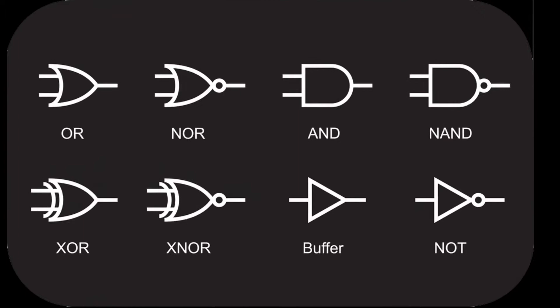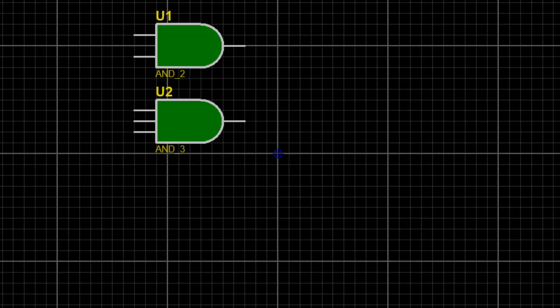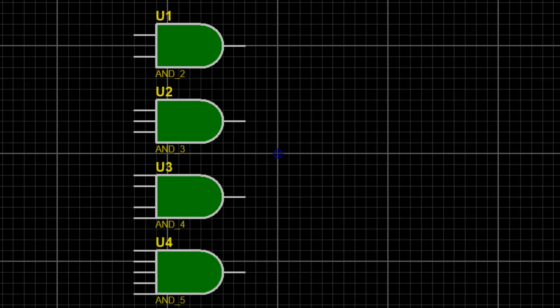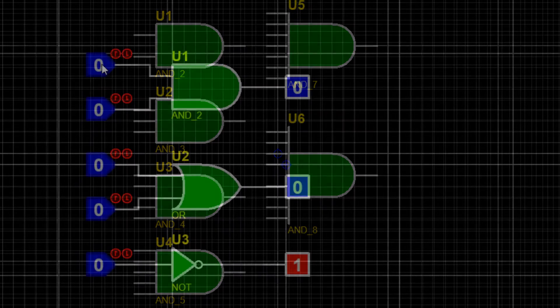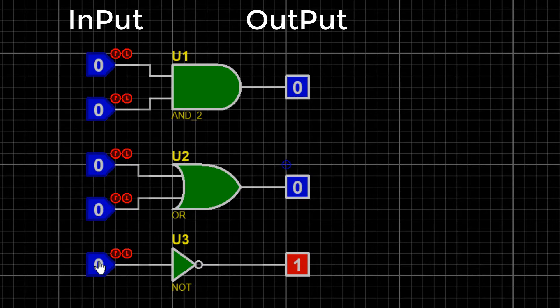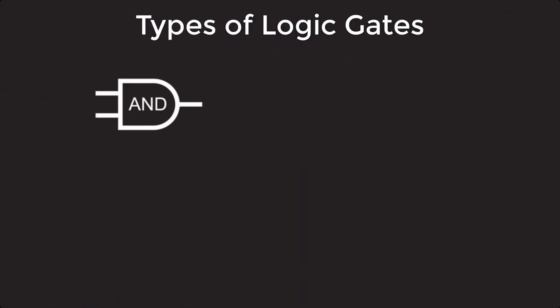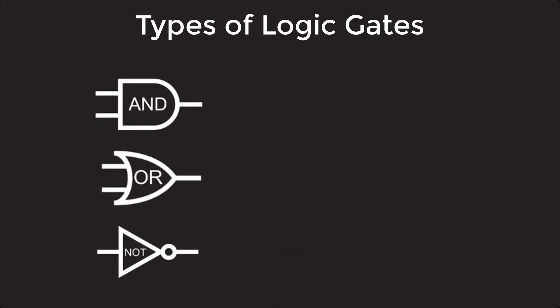A logic gate is an electronic circuit having one or more inputs and only one output. A logical operation is performed on one or more binary inputs that produces a single binary output based on a certain logic. Based on their function, there are three basic types of logic gates: AND gate, OR gate, and NOT gate.